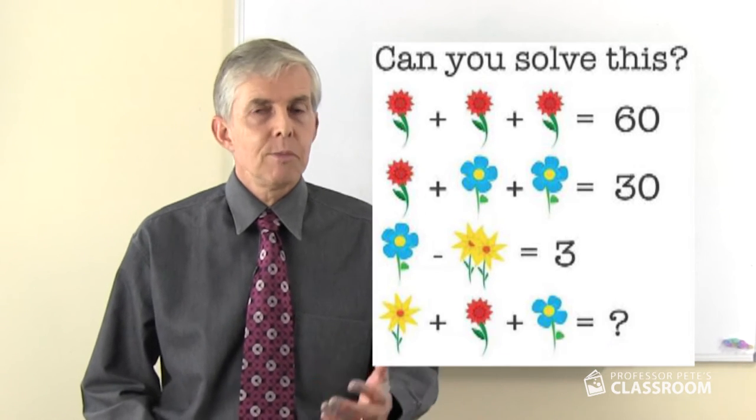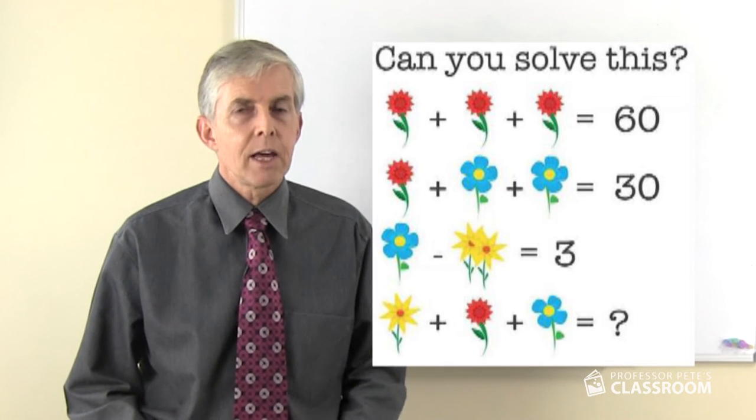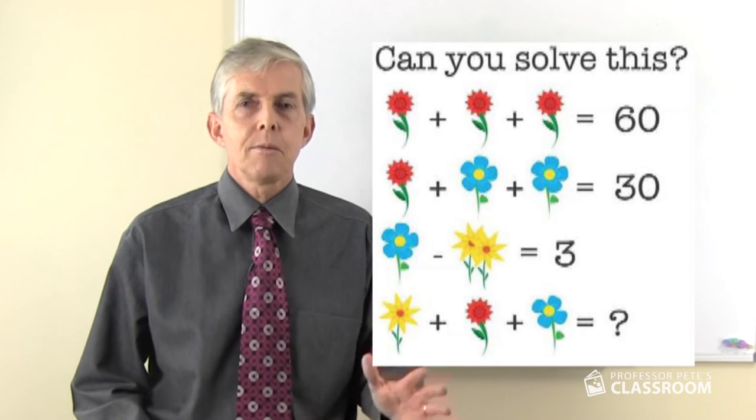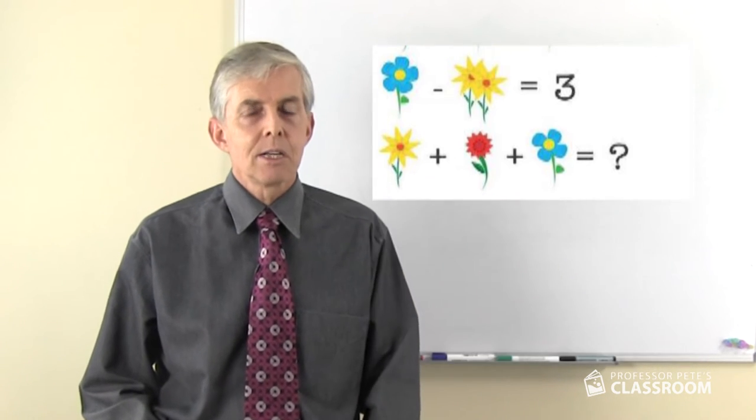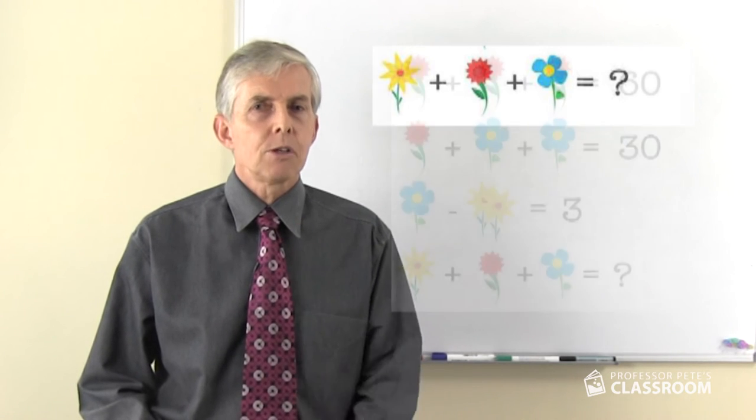Then we get to the last line, this should be where we put the answer. One red flower, one blue flower and one yellow flower equals, and if you didn't look at anything else you might say immediately well that must be 26 because it's 20 plus 5 plus 1. But have a closer look.